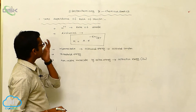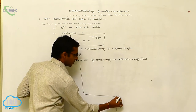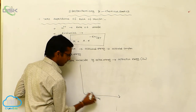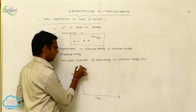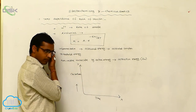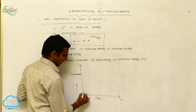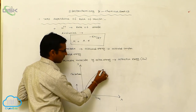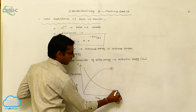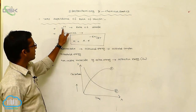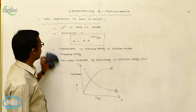In the temperature dependence of rate of reaction, when a graph is plotted with time on the x-axis and concentration on the y-axis, the concentration of reactants decreases over time while the concentration of products increases. Every 10 degrees Celsius rise in temperature doubles the rate of reaction. This is the temperature dependence of rate of reaction.